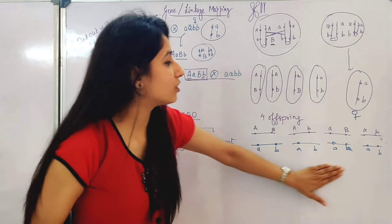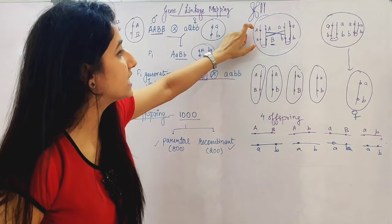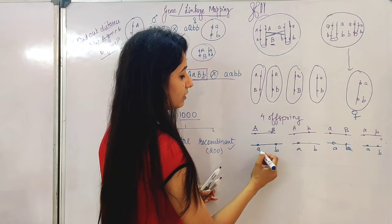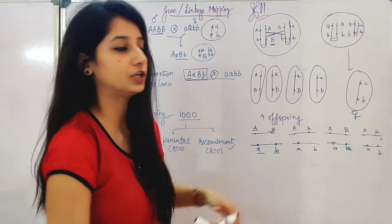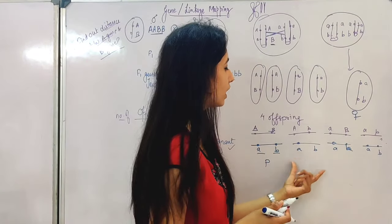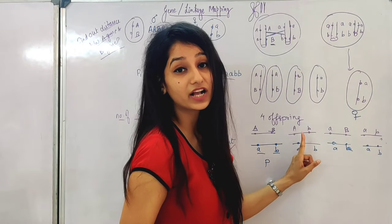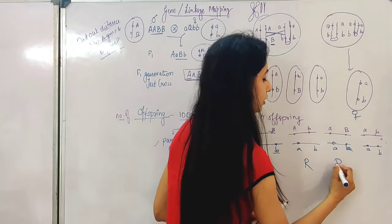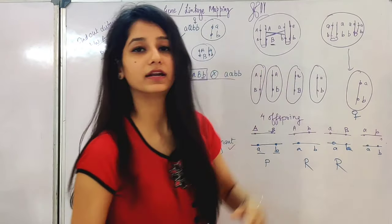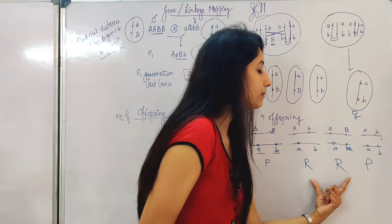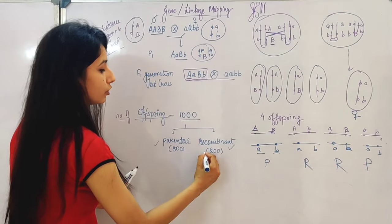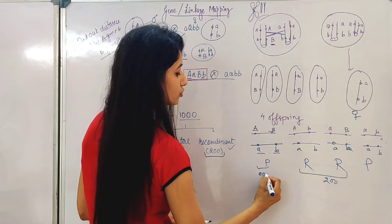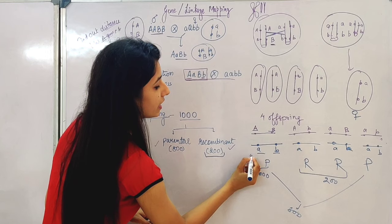From the four offspring types, we identify the parental type as capital A capital B and small a small b — there is no change. These are the parental types. The recombinant types are capital A small b and small a capital B, which show a change from the parental combination.